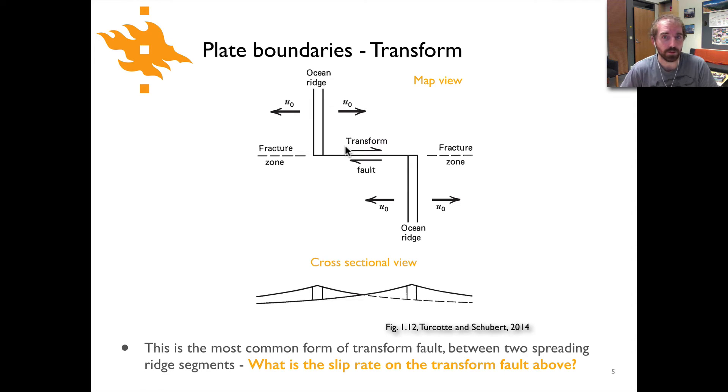Okay, I hope that you've come to realize that the slip rate on this fault is two times u0. The reason for that is on the top side of the fault in the top panel we have a plate moving off to the right with the velocity of u0, and in the lower panel it's moving to the left with the velocity of u0, and so of course their relative velocity would simply be two times u0.